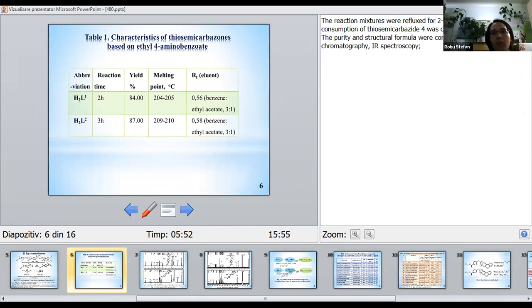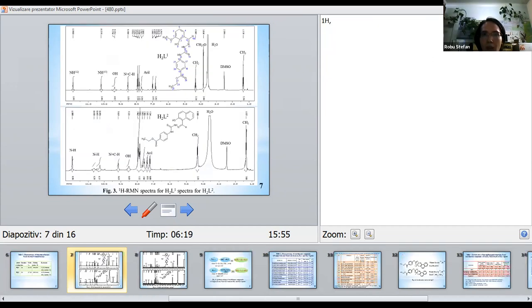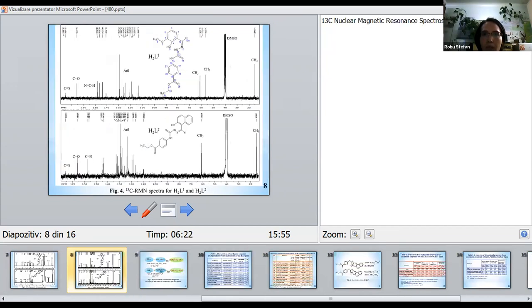2-hydroxy-3-methoxybenzaldehyde and 2-hydroxynaphthalene-1-carbaldehyde in ethanol with 3 to 4 drops of glacial acetic acid. The reaction mixtures were refluxed for 2 to 3 hours. The total consumption of thiosemicarbazide 4 was confirmed by TLC chromatography, the purity and structural formula were confirmed by TLC chromatography, IR spectroscopy, 1H and 13C nuclear magnetic resonance spectroscopy.